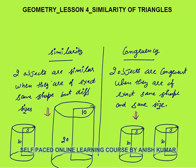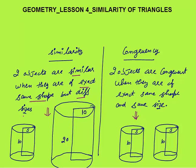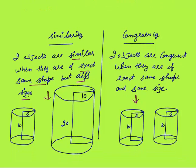Two objects are similar when they are of the exact same shape but of different sizes. Shapes would be same, sizes would be different. As you can see, I can show you two cylinders. These two cylinders are similar because they are of the exact same shape — they are both cylinders — but of different sizes.